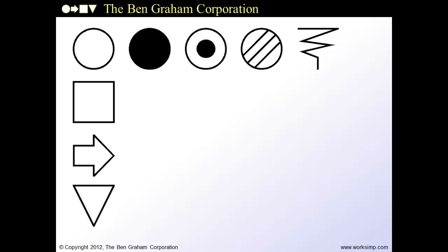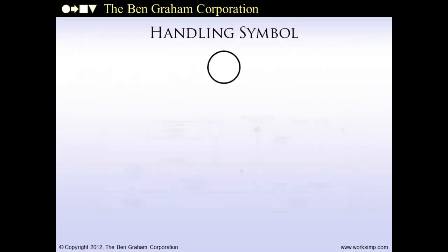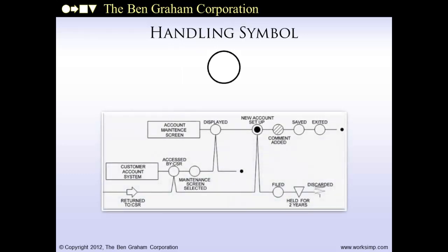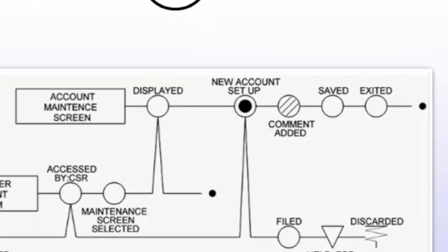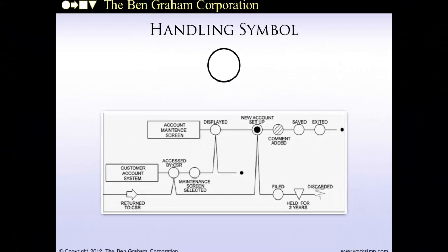The handling operation is represented with an open circle. In information processes, they represent activities that don't involve information change — paper shuffling, sorting — and also keying through electronic documents and application screens. In manufacturing processes, they represent make-ready and put-away tasks. Words associated with them include displayed, saved, and exited. Handling operations are typically the most common symbol on a process map, and since they're not adding value to items being processed, they're attractive opportunities for streamlining.